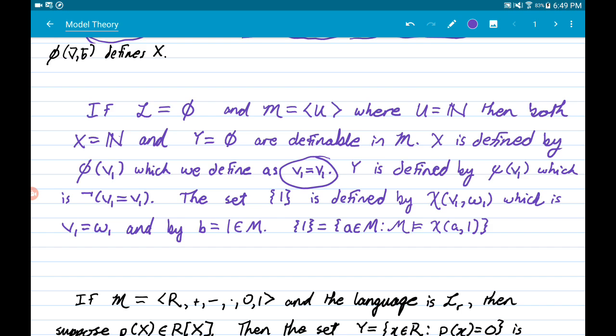For the empty set, I could take psi, again, only having one free variable, to be this negated equality. Really, it's just negation phi. And everything in the empty set satisfies this, and everything that satisfies this is in the empty set. So this formula defines the empty set.